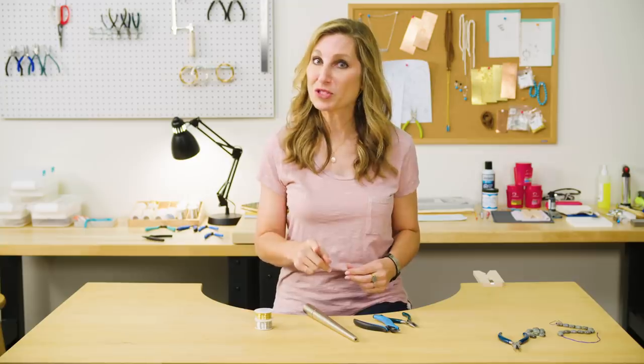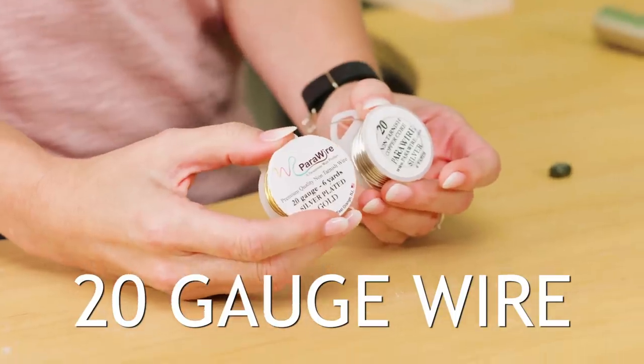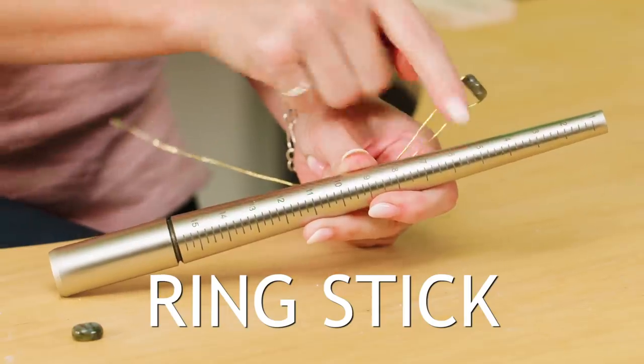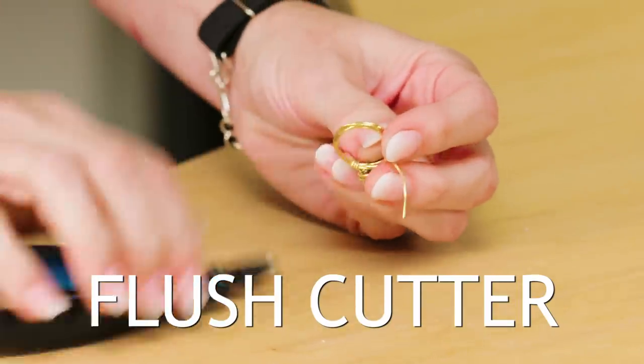I know what you're thinking, that was so easy, and you're about ready to go make a million rings, right? But don't forget what you need. You're going to have to have some 20-gauge wire, a bead or gemstone, and a few tools like a ring stick, a flush cutter, and your chain nose plier.